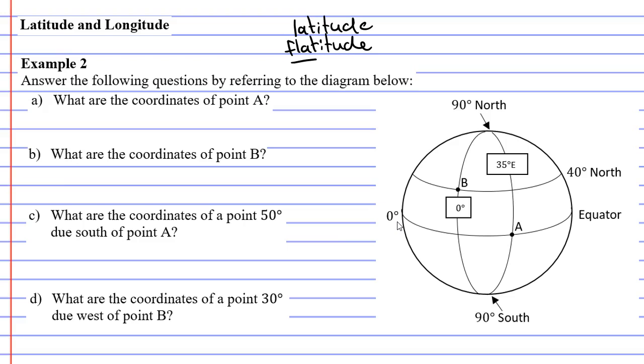And that's how people remember which one's which. So, point A has a latitude of 0 degrees. It's on the equator. And then the longitude is the one that comes up and down. So the longitude is 35 degrees east.